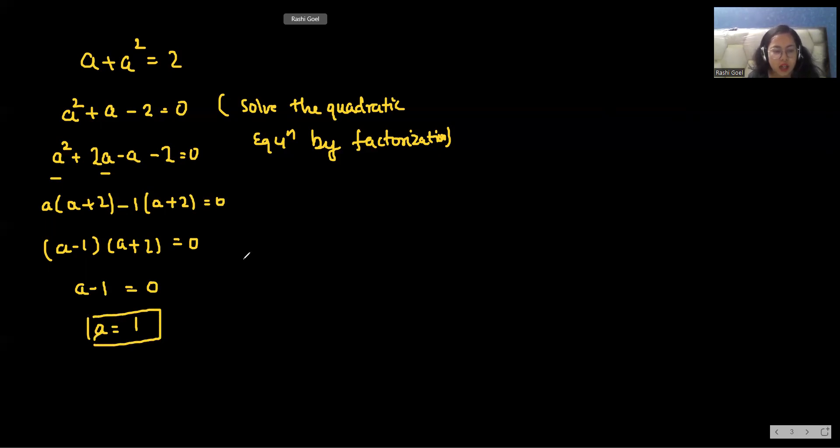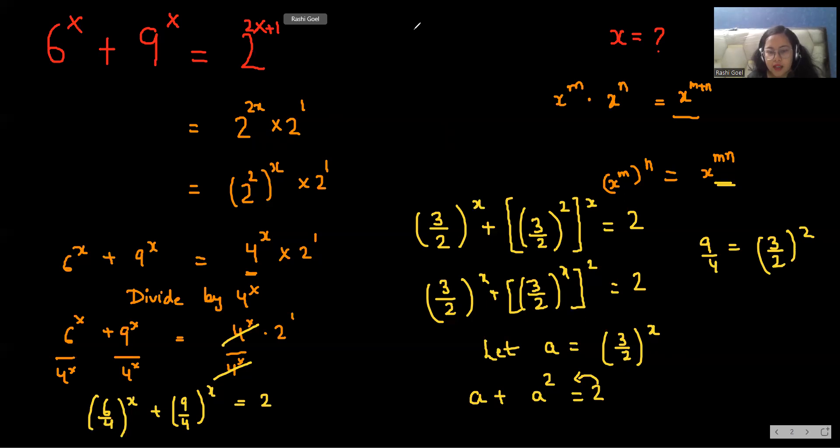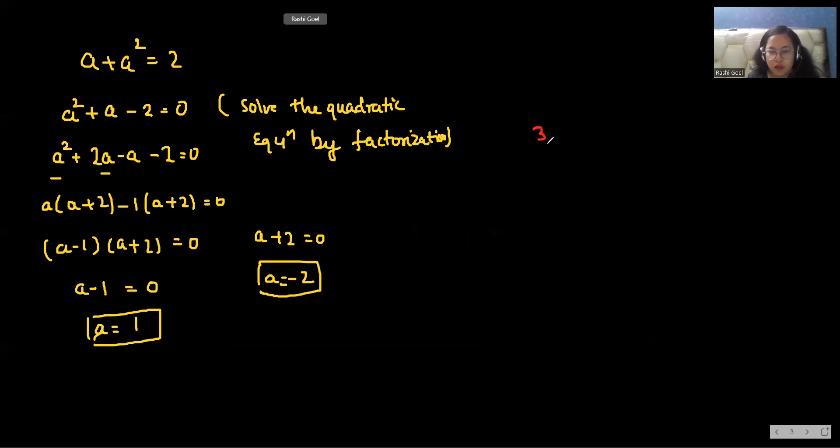And the second one is a + 2 = 0, that is a = -2. So now let's substitute the value. I'll take it as (3/2)^x = a. So instead of a, I'm writing (3/2)^x. So (3/2)^x = 1, and second case is (3/2)^x = -2.